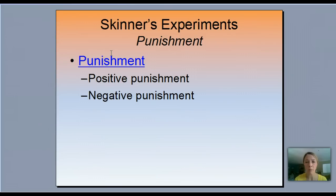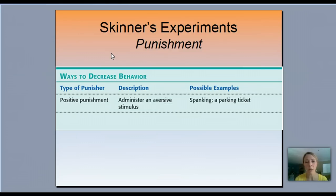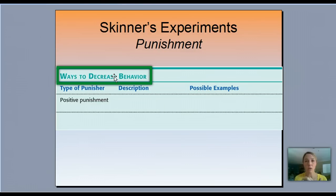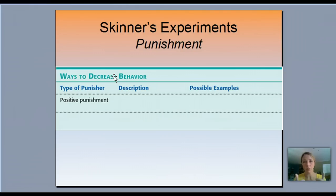Now let's talk about positive and negative punishment. We've talked about rewards — adding or taking away something. Now let's talk about punishment. If I'm rewarding behavior, I want to increase it. But if I want to decrease behavior, I use punishment. So rewarding increases behavior, punishment decreases it. A positive punishment is when I give an adverse stimulus — I'm adding something to the situation. A spanking would be a positive punishment — remember, positive doesn't mean good here, it just means something is added.